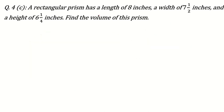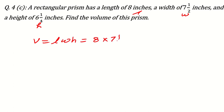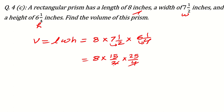Next question: a rectangular prism has a length of 8 inches, a width of 7 and a half, and a height of 6 and one quarter. Find the volume. Volume equals L × W × H, so it is 8 multiplied by 15 over 2 (which is 7 and a half as an improper fraction) multiplied by 25 over 4 (which is 6 and one quarter). The 4 and 8 cancel.